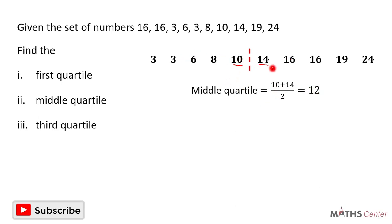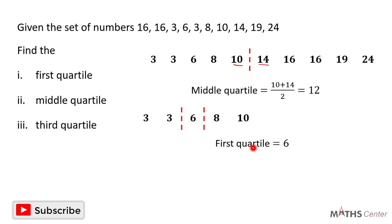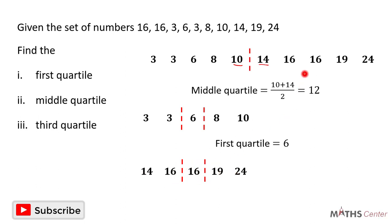The first part is 3, 3, 6, 8, 10 — five numbers. The middle number of the first part gives us the first quartile, which is 6. So the first or lower quartile is 6. The second part is 14, 16, 16, 19, 24 — five numbers. When we divide it into two equal parts, we have 2 to the left and 2 to the right. The middle number is 16, so the third or upper quartile is 16.